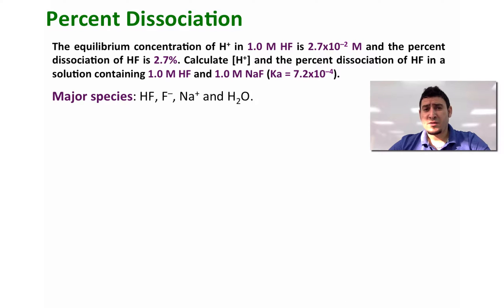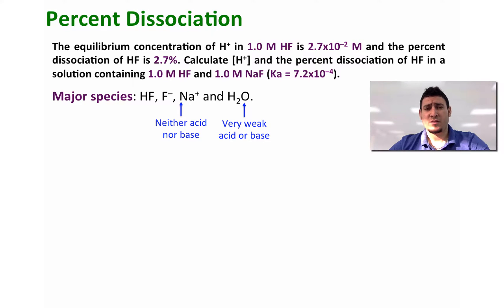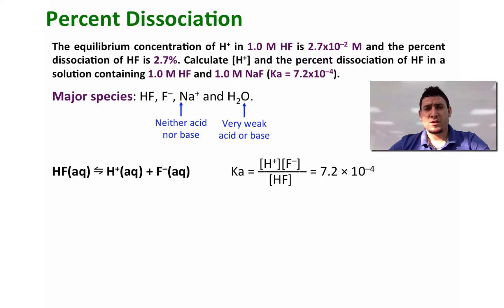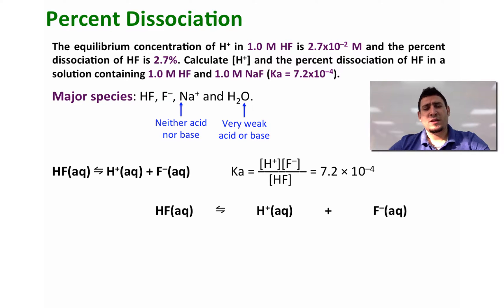First, let's determine the major species in this reaction. We have hydrofluoric acid, fluoride, sodium ion, and water. Sodium is neither an acid nor a base, and water is a very weak acid or base. So we can write the equilibrium of the dissociation of hydrofluoric acid, where the Ka expression is given by the product of the concentration of H plus and concentration of F minus divided by the concentration of HF, equal to 7.2 times 10 to the power minus 4.